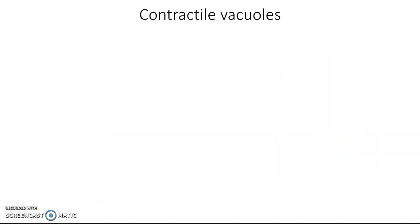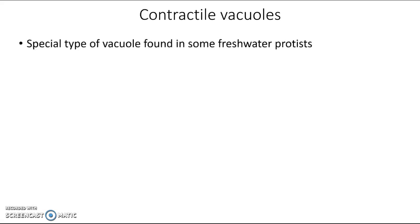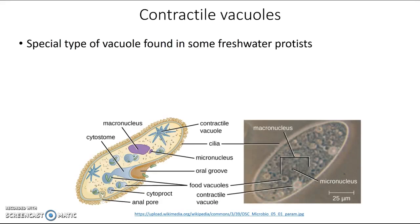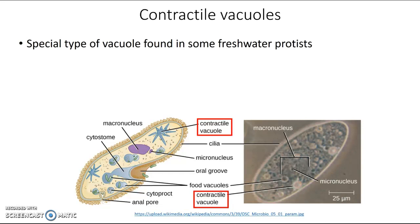The last type of vacuole is a really special one called a contractile vacuole, found in some freshwater protists such as paramecium. You can see that paramecium has food vacuoles and also these contractile vacuoles. They have a vaguely star-like shape with one central area and spokes kind of sticking off it, which you can see both in the diagram and in the actual photo, and the job of the contractile vacuole is pretty special.